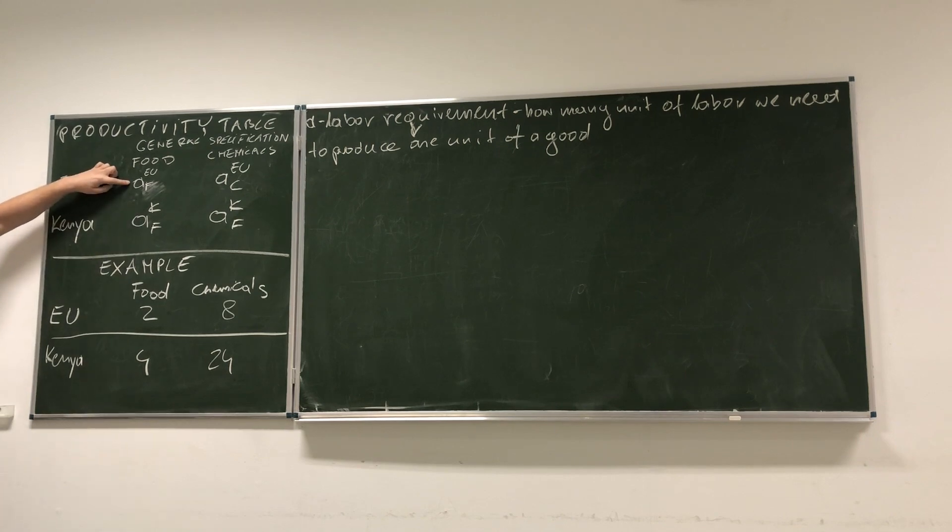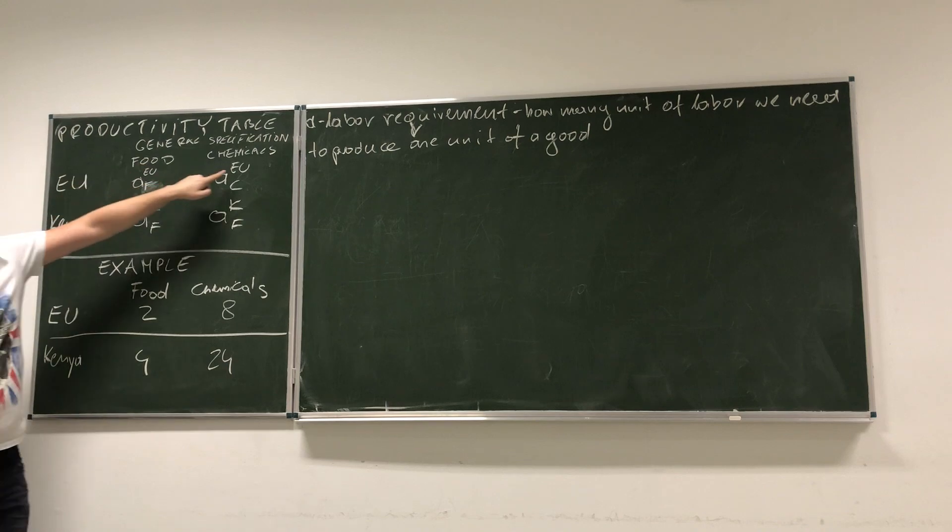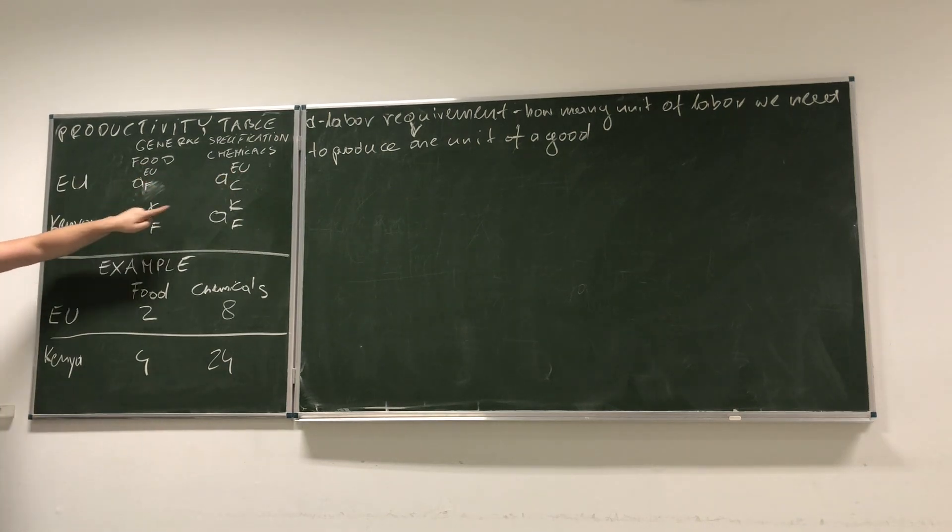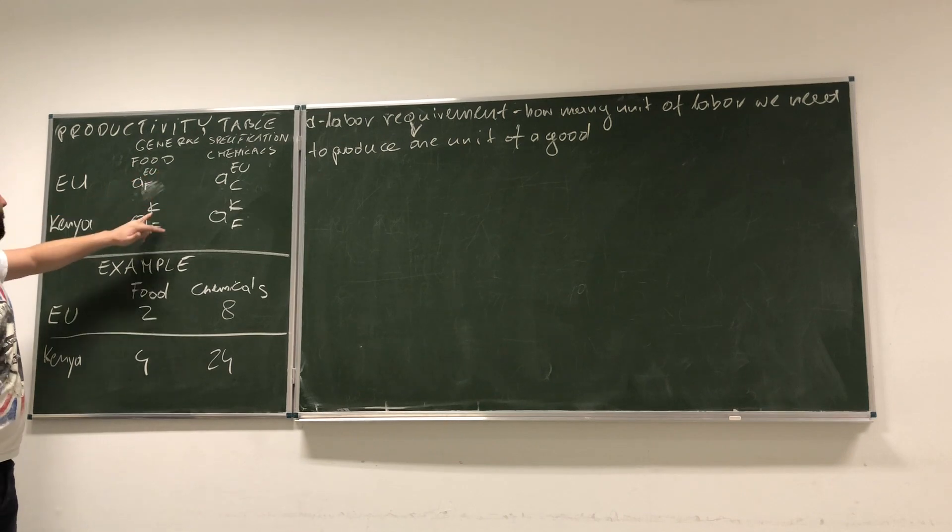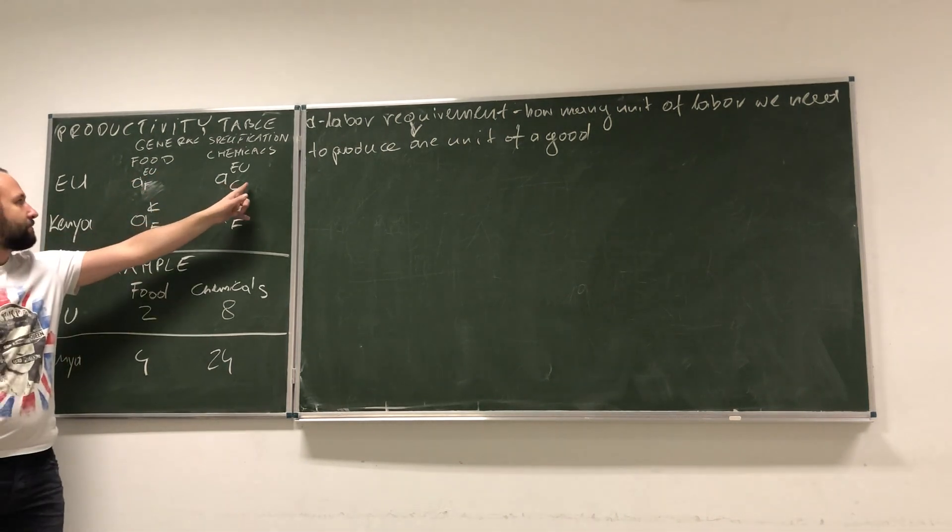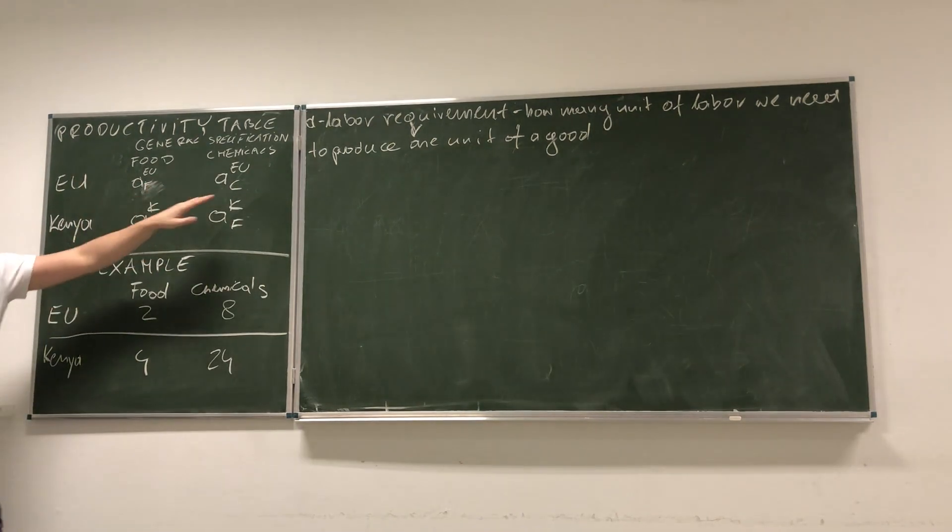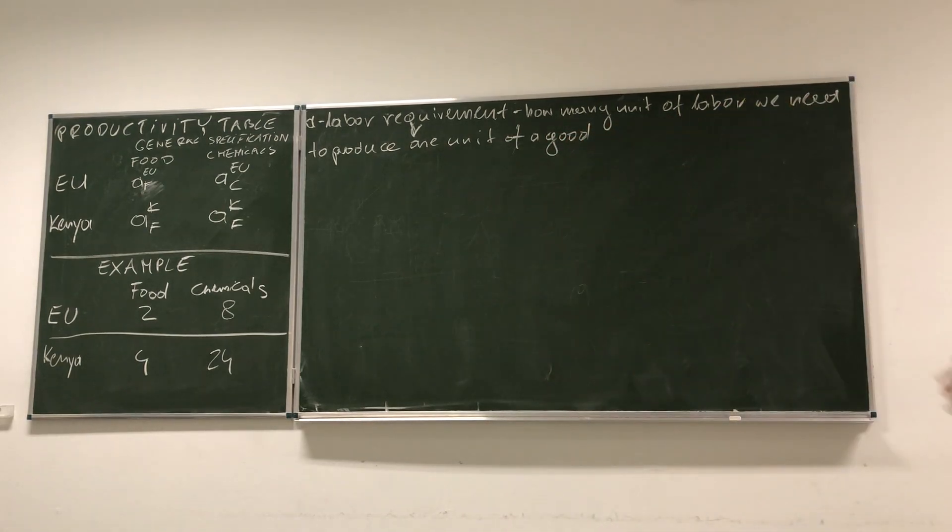Look, A, of course, is a labor requirement. And you have superscript. Superscript is either EU or Kenya, so it tells you whether this is labor requirement for EU or Kenya. And then you have subscripts, where F means food and C means chemicals.